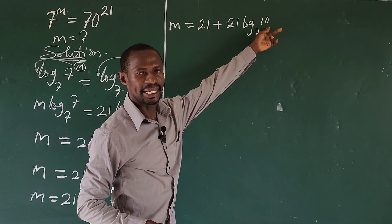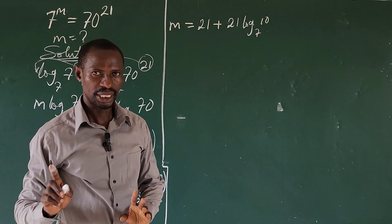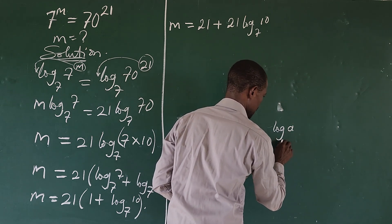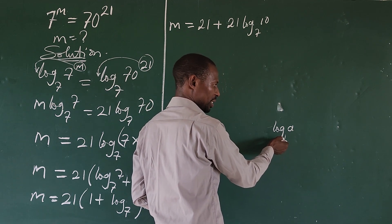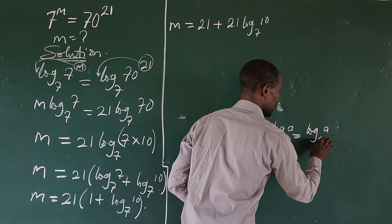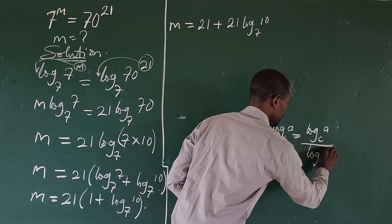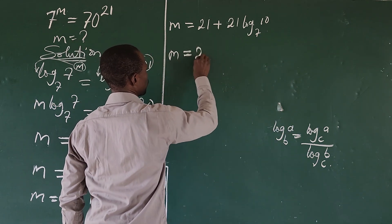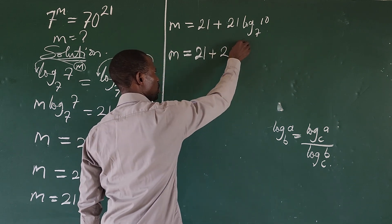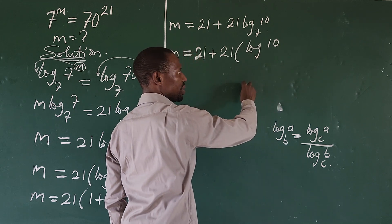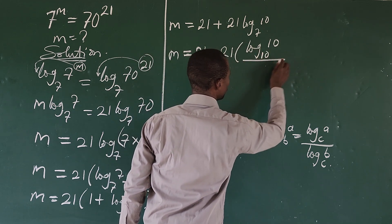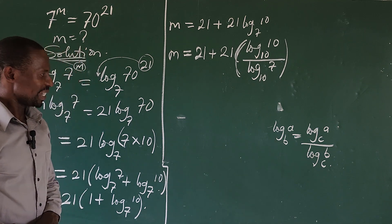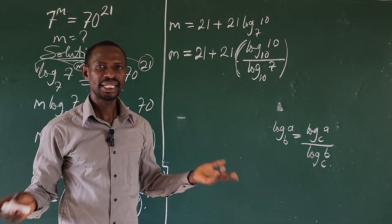We can apply another law called the change of base law. It says: log base b of a equals log base c of a divided by log base c of b. Applying that here, m equals 21 plus 21 times (log base 10 of 10) divided by (log base 10 of 7).